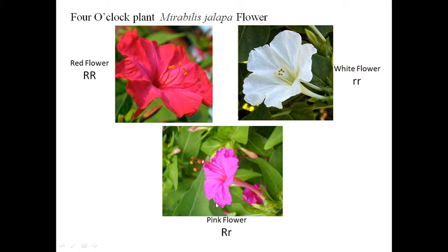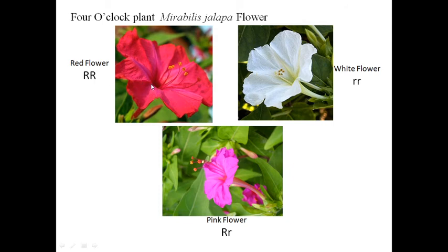As per our Mendelian monohybrid cross principle, capital R, small r is a heterozygous condition and should produce a red flower because capital R is present. But this flower is pink in color. Why? Because capital R — the so-called dominant R — is not completely expressed; it is partially expressed. And some characters of the white flower are also expressed. The two blend together, producing the pink color. This is incomplete dominance.